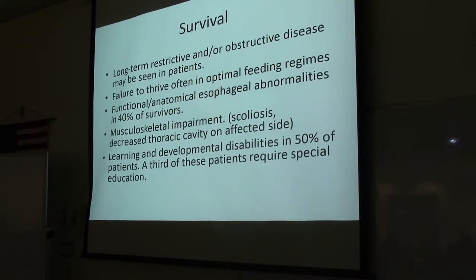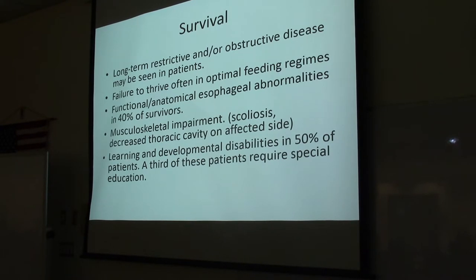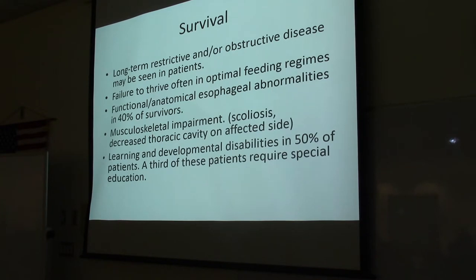What is the survival like for these babies born with intestines in their thorax? Long-term, they get restrictive and obstructive lung defects and failure to thrive. Some have esophageal abnormalities because everything didn't develop correctly, and they can have scoliosis. Their thoracic cavity doesn't develop correctly, and 50% of them will have learning and developmental disabilities.